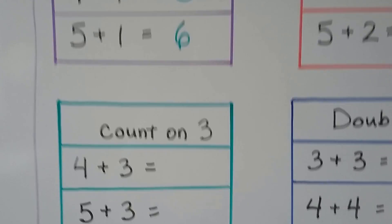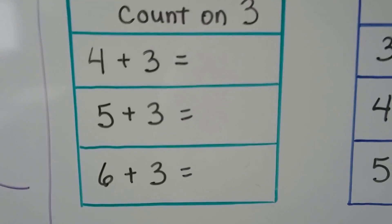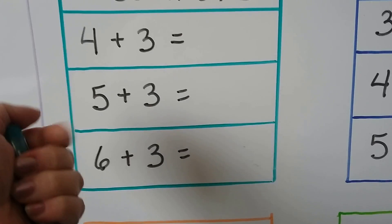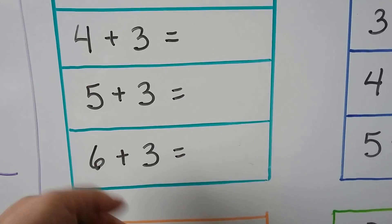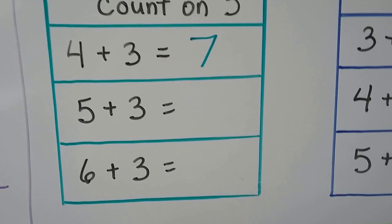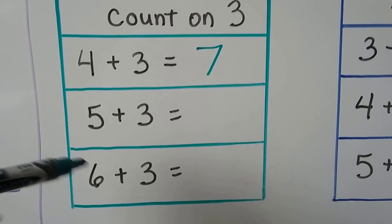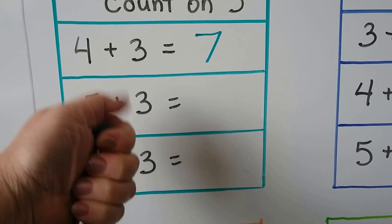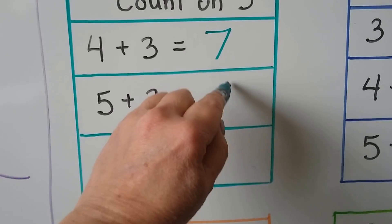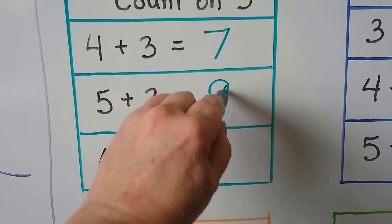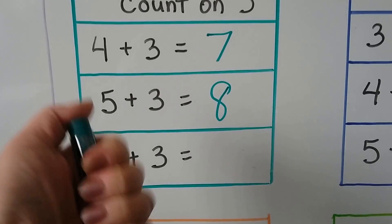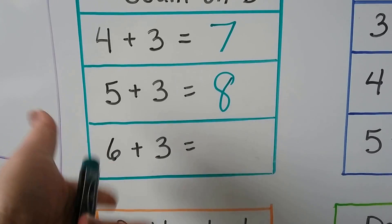We can count on three. We start with the greater addend, four — four, five, six, seven. We start with the greater addend, five — five, six, seven, eight. We start with the greater number six — six, seven, eight, nine.